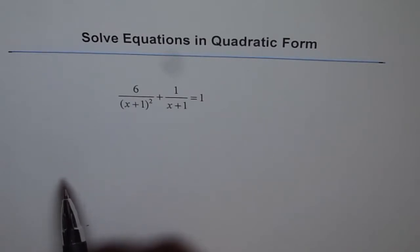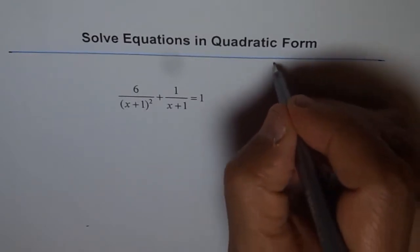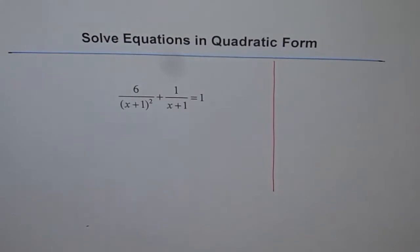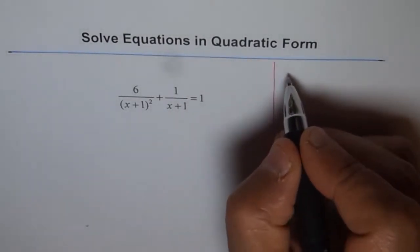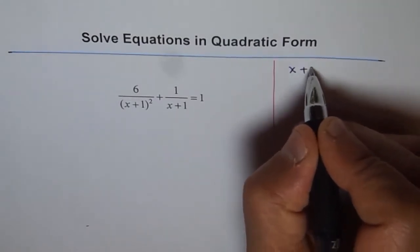But I hope it can be written as a quadratic equation. Let's try to figure it out. So I'll do some substitution and see if it works. So what we can do is we can write x plus 1 equals t.